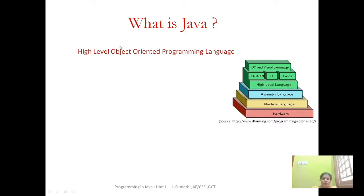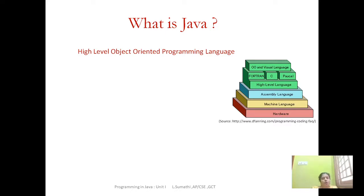So what is object-oriented? In high-level languages there is an evolution: you have structured language, procedural language, and object-oriented. In an object-oriented language, you view everything in terms of objects, which we will discuss in more detail in further sessions.